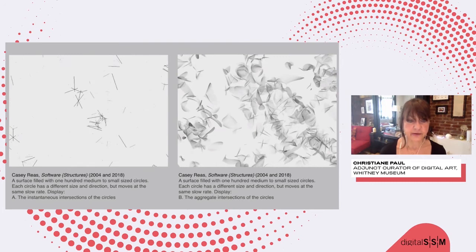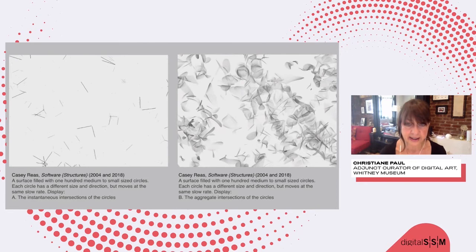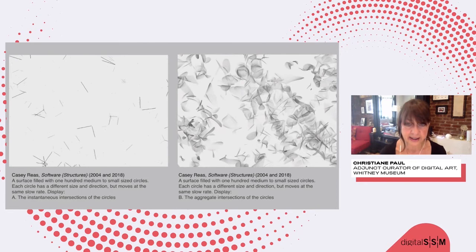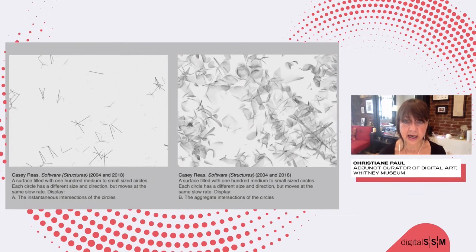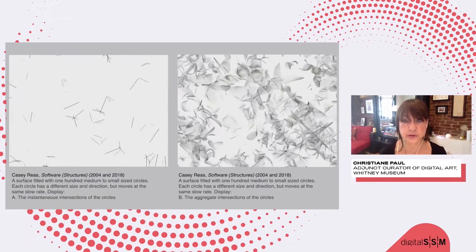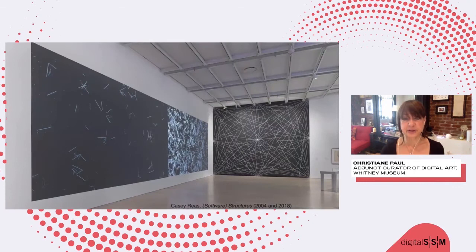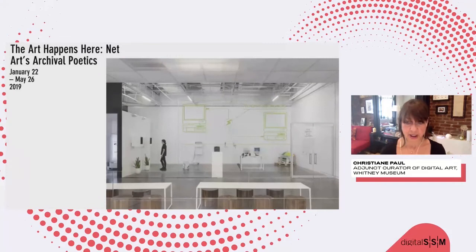Another example from that exhibition would be Casey Reas's Software Structures, in which he tries to point to connections between software art and conceptual art of artists such as LeWitt. Here you have one of the instructions created by Casey in two different variants. What you're looking at is how you would encounter this work on the Whitney's Artport website for which it was originally commissioned. But in the exhibition space, we showed this as large-scale projections next to each other, and for legibility also flipped the background — which Casey is completely fine with, as it's part of the work that it is flexible in that way.